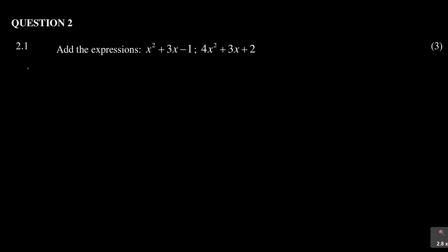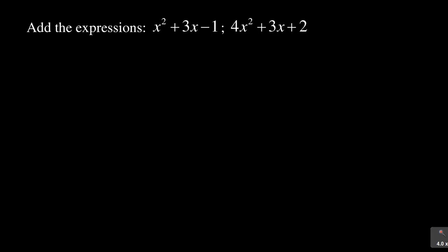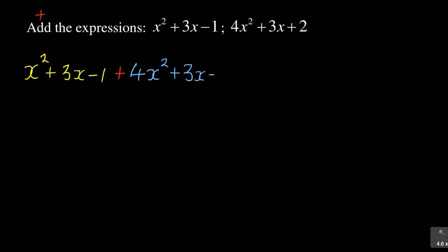Now let us look at question 2.1. In this particular question you were required to add the expressions, and they have given you two expressions. We must add these expressions — you can see the two expressions that were given. Remember the word 'add' means a plus sign. So we are supposed to add x² + 3x − 1, and add it with 4x² + 3x + 2.